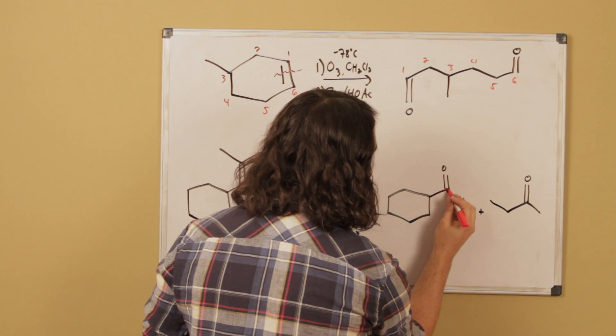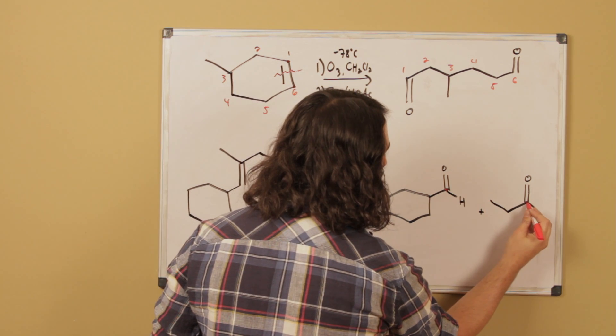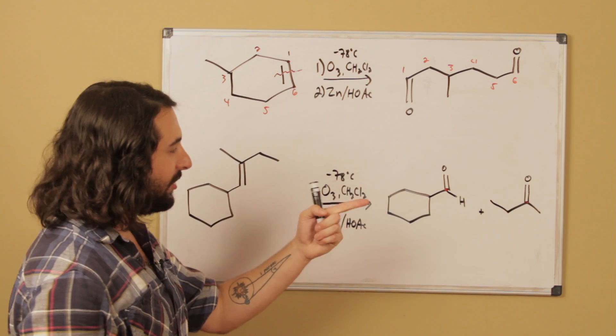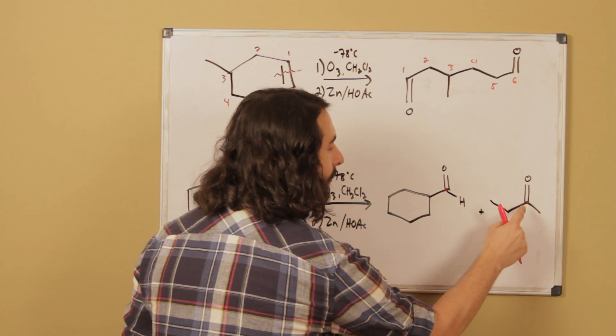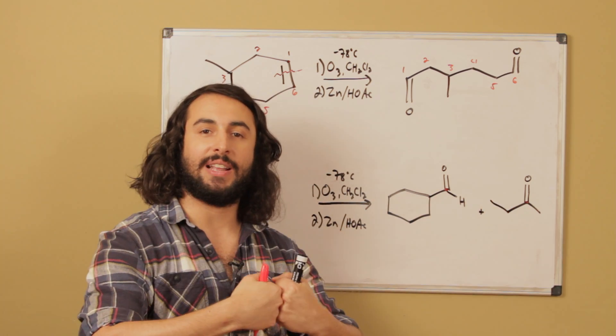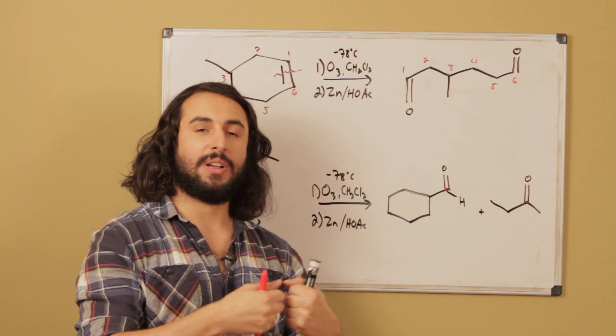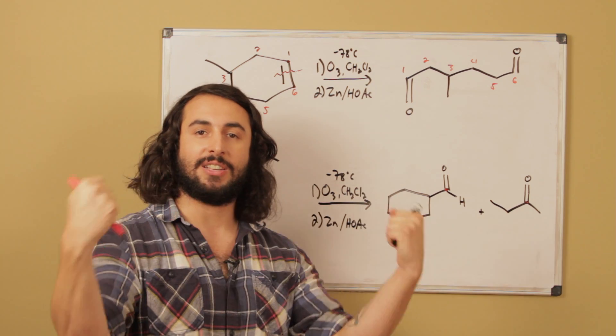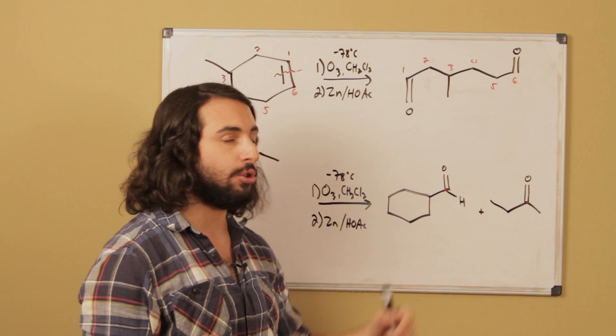So this is the carbonyl carbon right there, this is the carbonyl carbon right there. In the forward direction, these two carbons must have been participating in a double bond with one another, because when ozonolysis cleaved that double bond it generated those two carbonyl carbons.